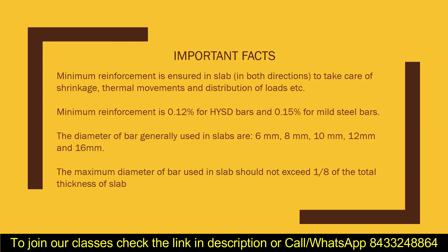It is simple to remember: the minimum reinforcement for HYSD (high yield strength) steel is 0.12 percent and for mild steel bars it is 0.15 percent. These are important values to remember for interviews, where you may be asked what the minimum reinforcement is and why it is required.